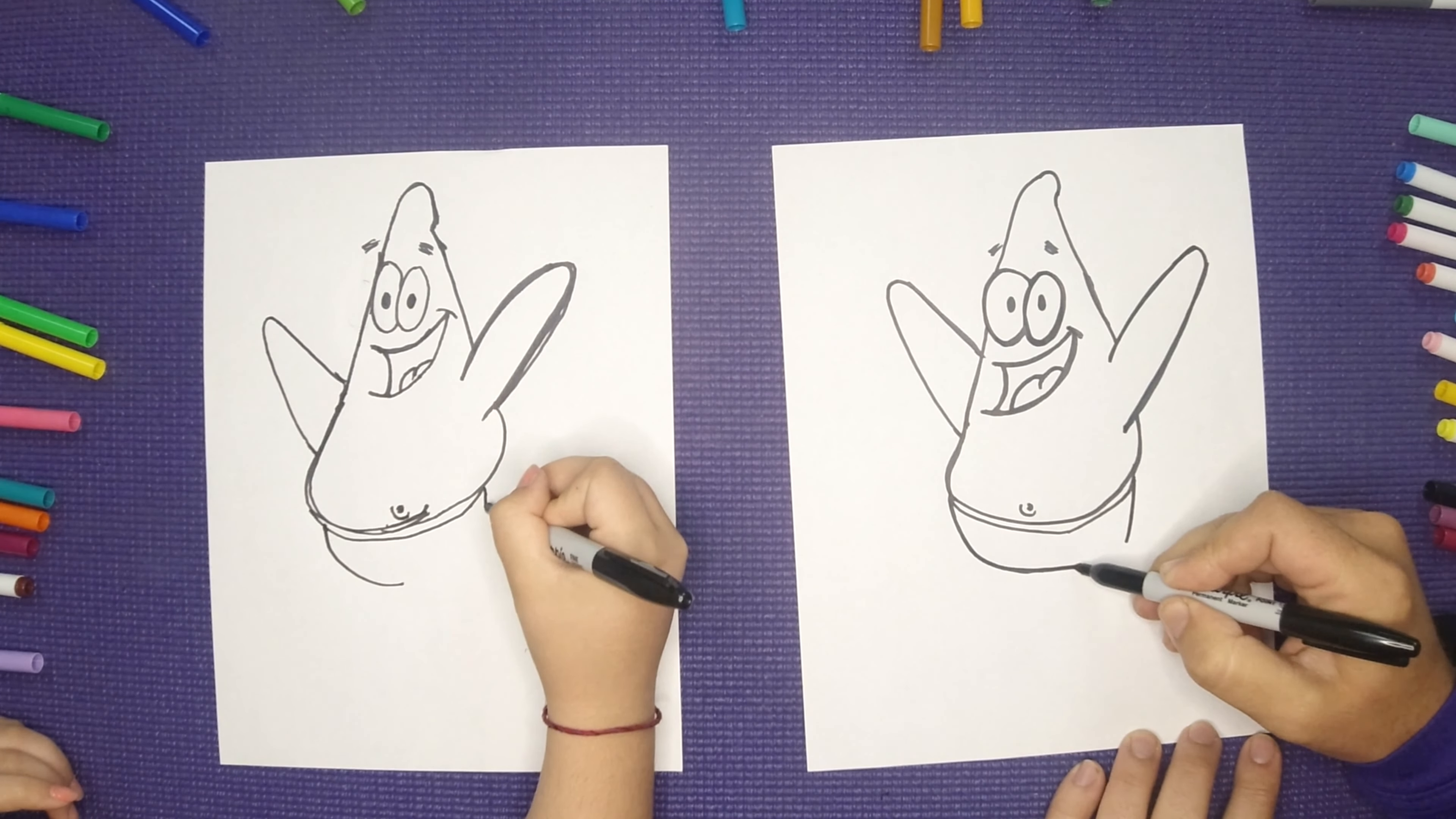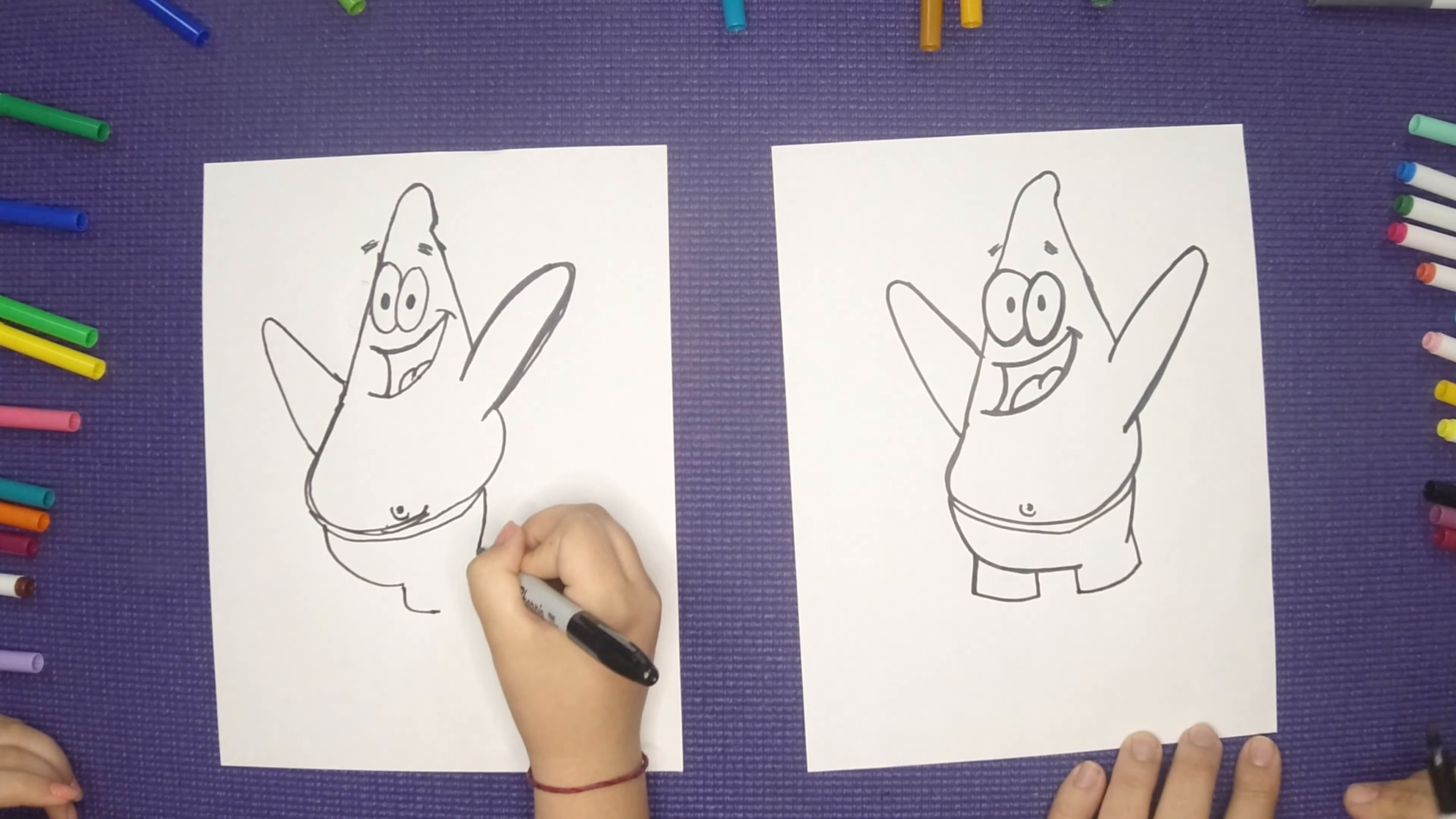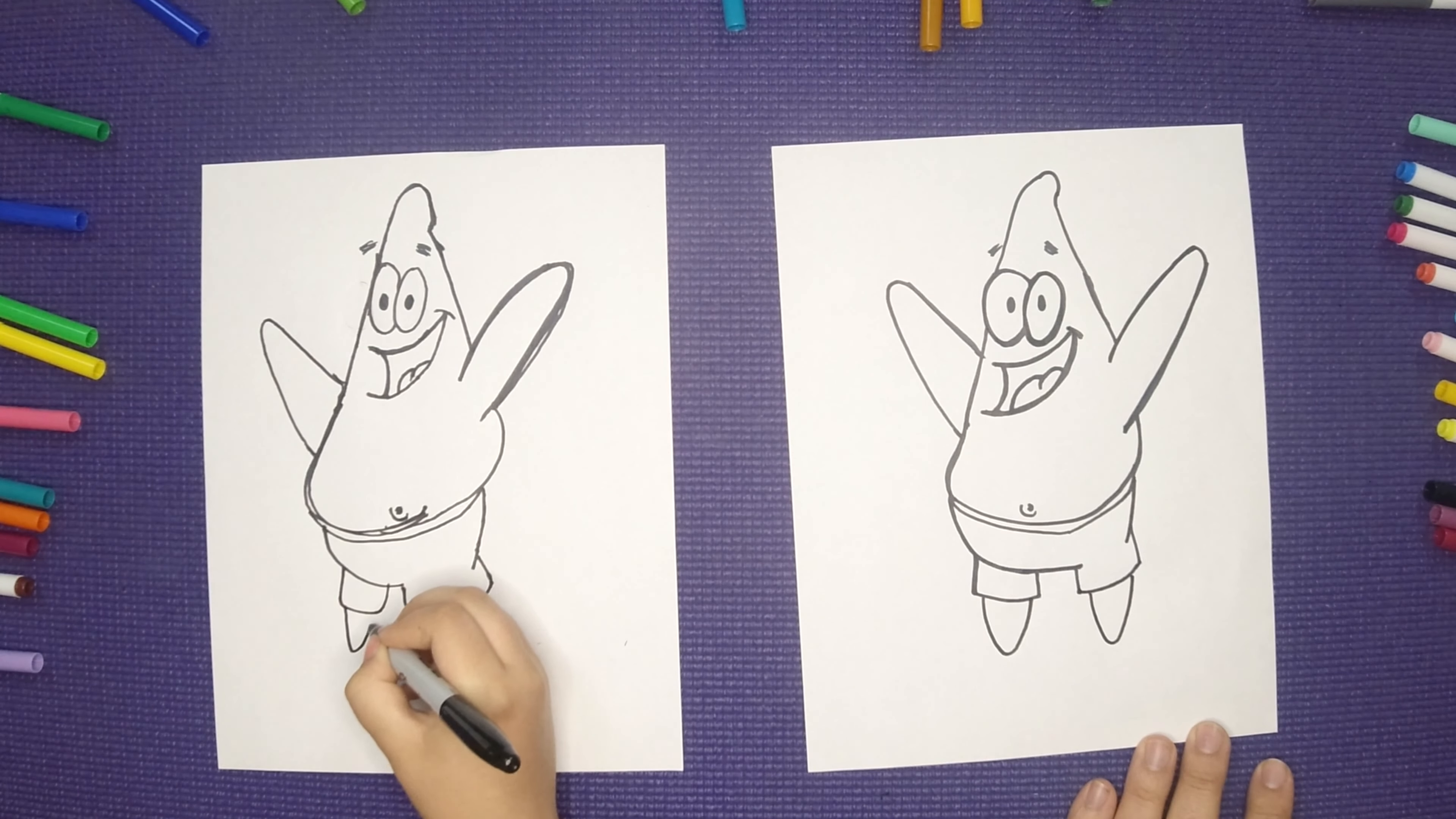Then we're going to come down with one leg, and then the other one kind of sits behind it - see how we did that. And his starfish legs, they look just like the arms, come out the bottom. And then we got...